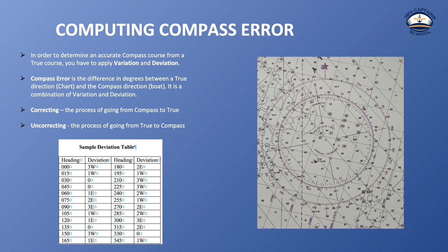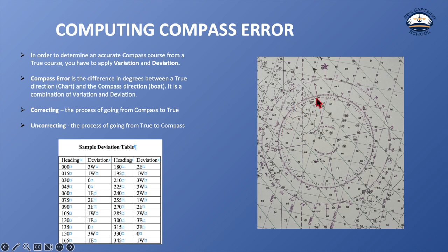In order to determine an accurate compass course from a true course, we have to apply variation and deviation. Compass error is the difference in degrees between true and compass direction, and it is a combination of variation and deviation. When correcting, we go from compass to true. When uncorrecting, we go from true to compass. On the compass rose on a chart, the outer ring is true — with the north star and zero at the top — and the inner circle is magnetic. Always use the outer ring. Never use the inside ring.